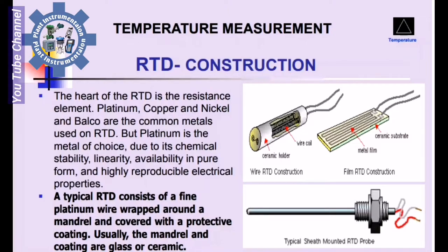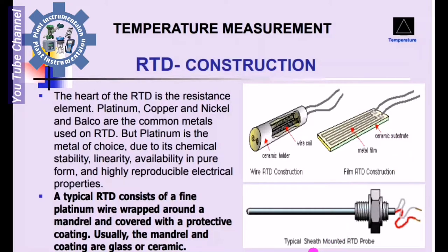A type RTD consists of a fine Platinum wire wrapped around a mandrel and covered with a protective coating. Usually the mandrel and coating are glass or ceramic. RTD construction includes Ceramic Holder, Wire Coil, Film Coil, Metal Film, and Ceramic Substrate configurations, as seen in a typically sheet-mounted RTD probe.